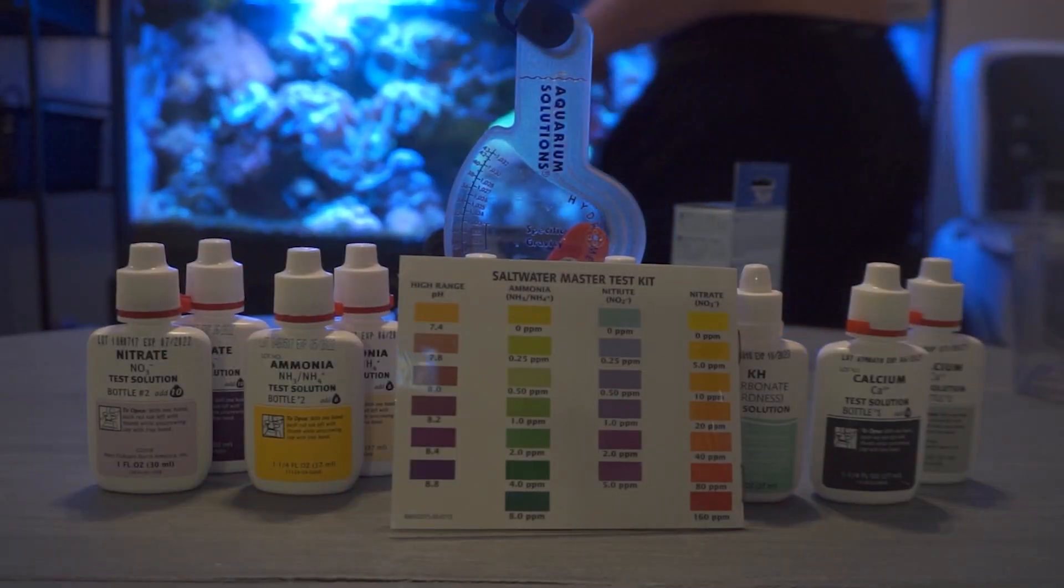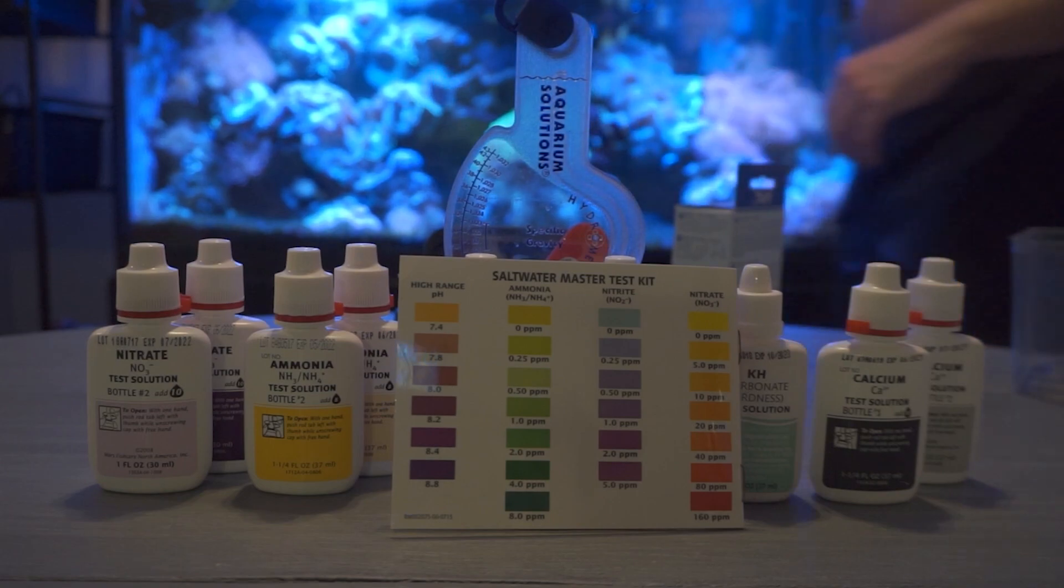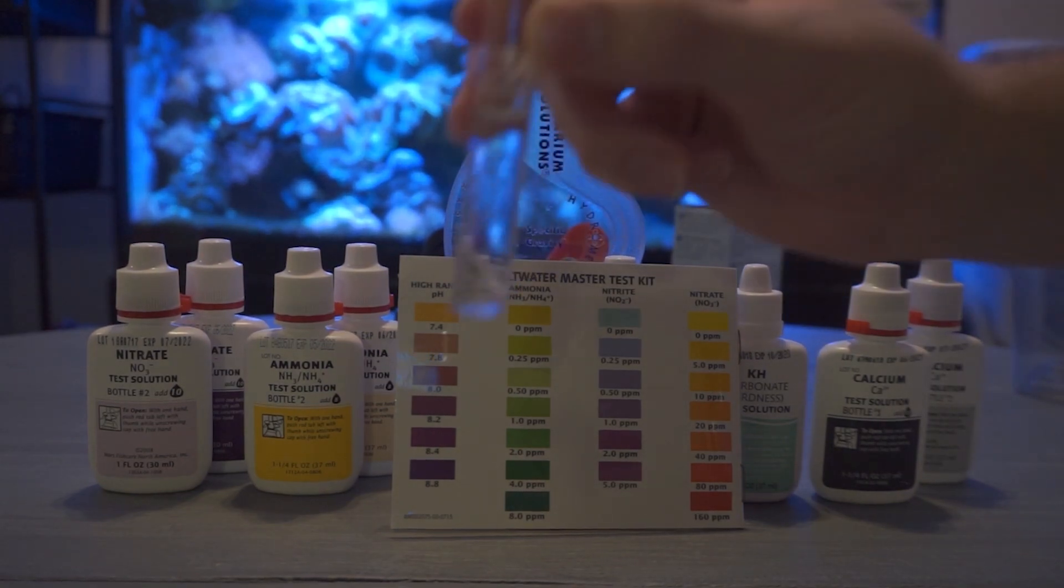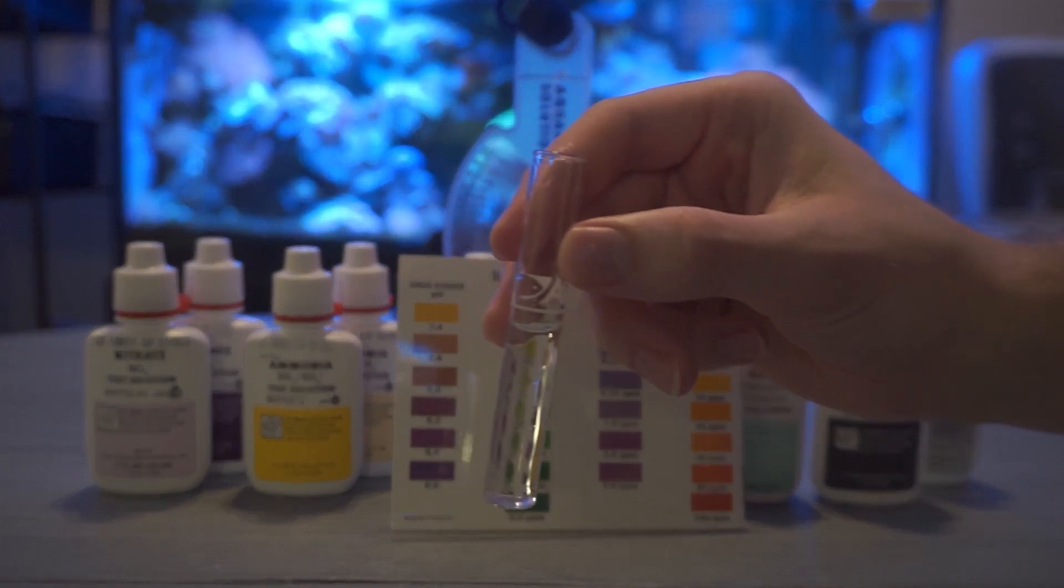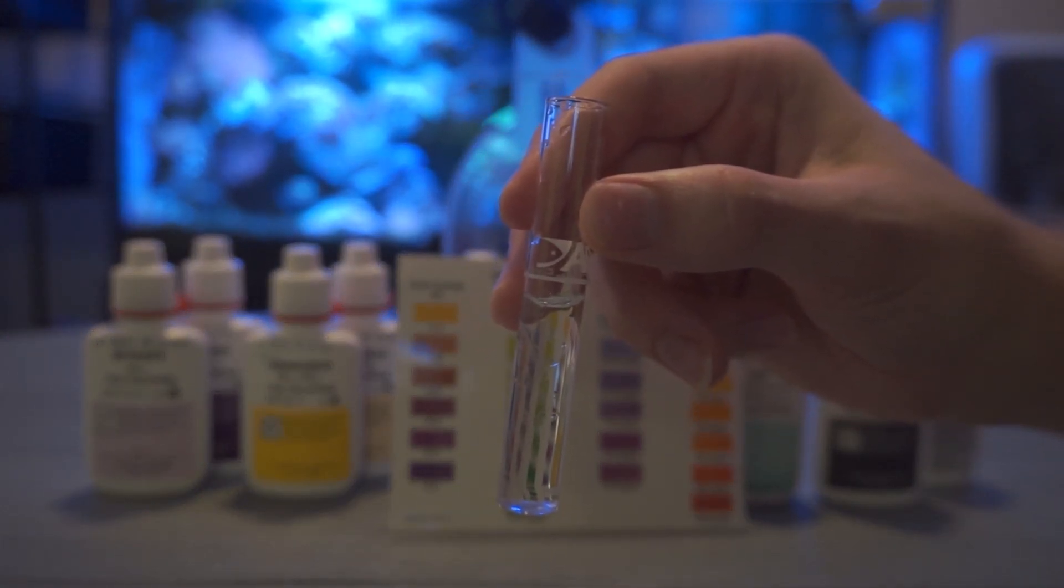So first up we're just going to get a sample of water straight from the tank. Usually I'll just put the test tube in the water if I know it's clean. If not I'll usually scoop out some water into a bowl and then I can put the water into the test tube. Now what's nice about these API test tubes is they have a nice little line right in the middle of them. They'll tell you how high to fill the water up to.